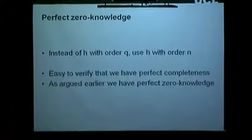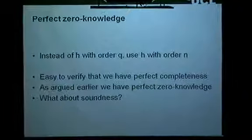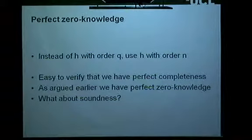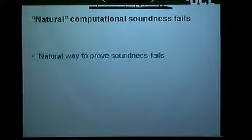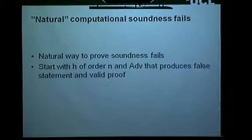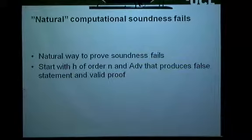But we still have to check what happens with soundness, and there's actually a subtle issue here. The natural way to prove soundness — and I put 'natural' in quotes because I actually think it's a flawed definition of soundness — may fail here. We don't know whether it fails or not, but we don't have a proof that it is actually sound. The natural way to prove it would be: we start with h having order n, we have some adversary producing proofs for a false statement, and then we try to switch and say h has order q, and since the adversary cannot distinguish, it must have roughly the same chance of producing and accepting a proof.